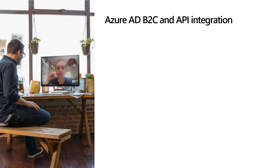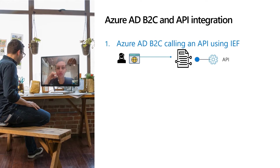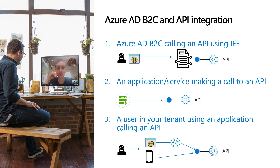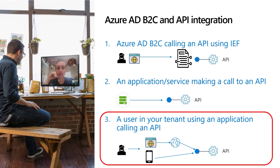When talking about Azure AD B2C integration with APIs, a few implementations come to mind. Starting with an Azure AD B2C policy calling an API — for example, when you need to call a CRM database from within your B2C policy, you can secure the downstream API using certificates, access tokens, or basic username and password. Also, you'll see an application making a call to an API; you can use access tokens obtained from Azure AD. Last, but the most used pattern, is when a user from your tenant using an application is making an API call — a user taking an action on an application that results in an API call. The user identity is in the token in this case. Think of a banking app making a balance inquiry. We will spend more time discussing this pattern during this session.